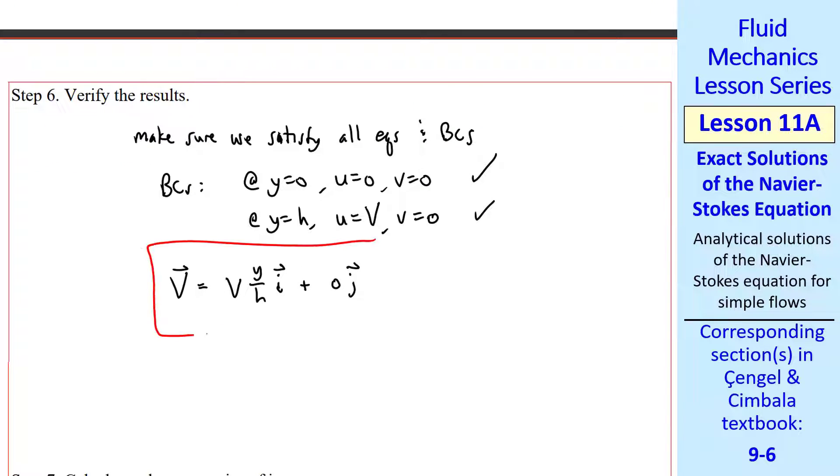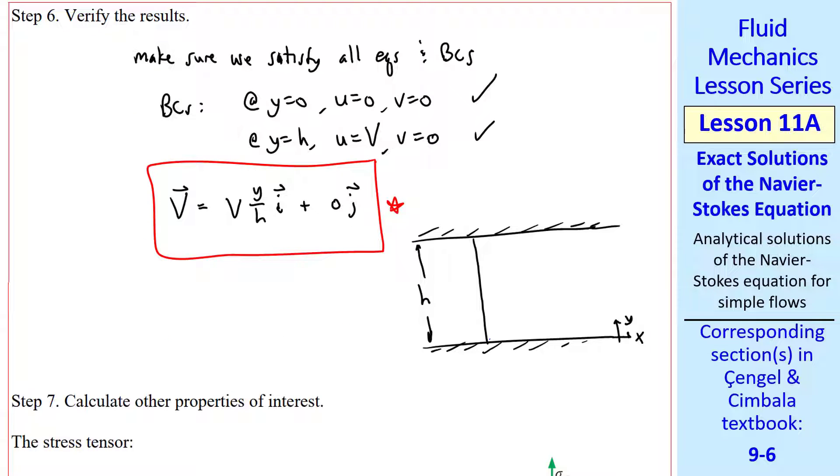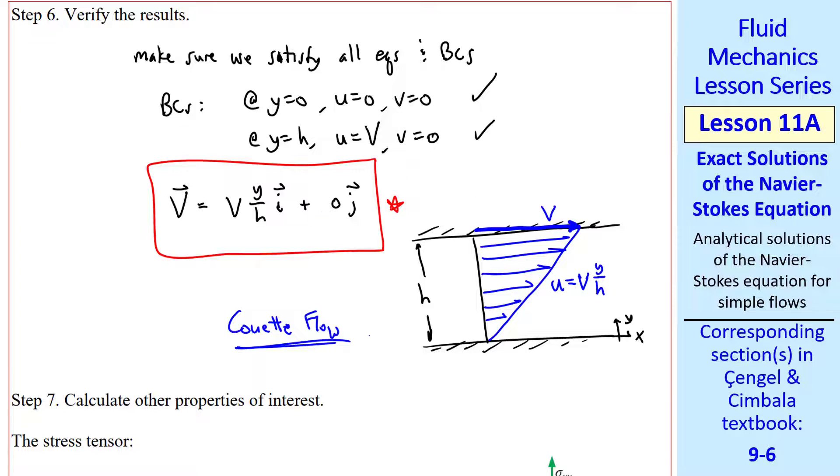The vector form of the final answer is v vector equals v y over h unit vector i plus zero unit vector j. We sketch the velocity profile, and we see it's linear from zero at the lower wall to capital V at the top wall. This is Couette flow.